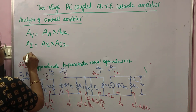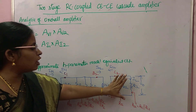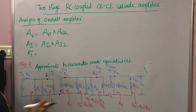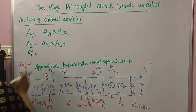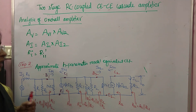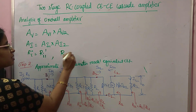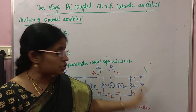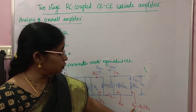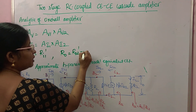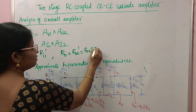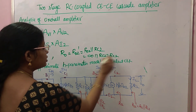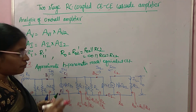The input impedance of the overall stage is nothing but RI1 dash. For the output impedance of the overall amplifier, it is nothing but the output impedance of the second stage — R02 dash. R02 dash is R02 in parallel with RC2, and since R02 is infinite, infinite in parallel with RC2 is nothing but RC2.